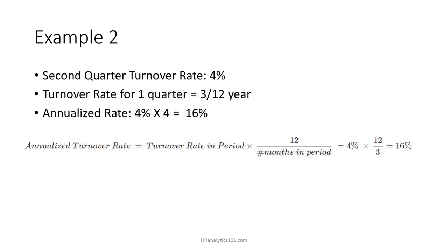As a second example, suppose I have a turnover rate of 4% in the second quarter. There are 3 months in each quarter, so I would multiply the 4% by 12 divided by 3, giving me a 16% annualized turnover rate.